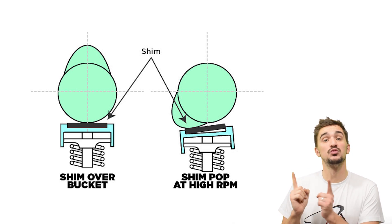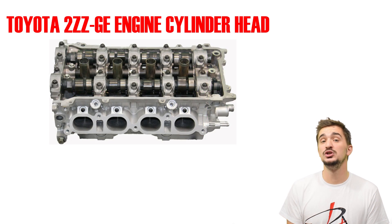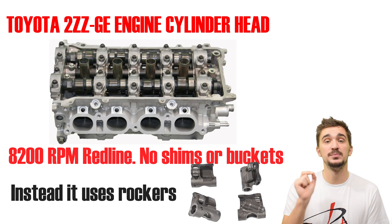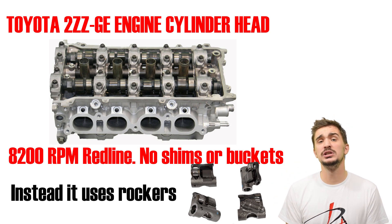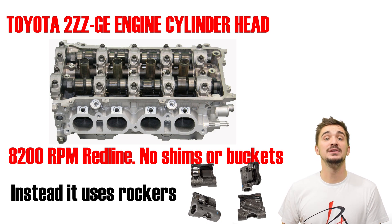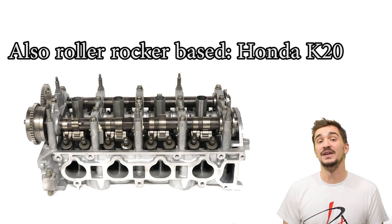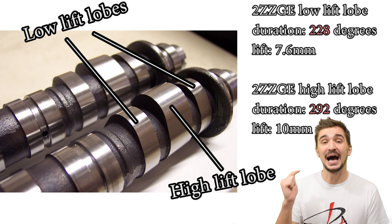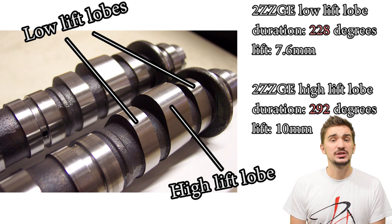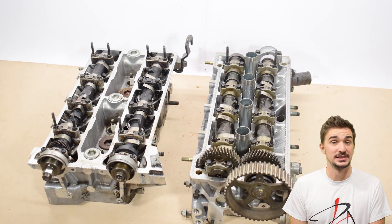This isn't something you have to worry about on a rocker-based valve train, and this explains why Toyota decided to use a rocker-based valve train on its more modern performance-oriented, high-revving 2ZZ-GE engine. You'll also find rocker-based valve trains on many other modern high-revving, high-performance engines, such as the Honda K20. All of these engines use variable valve lift and camshaft duration and have very aggressive cam specs on their high-duration, high-lift lobes. In contrast, most shim over bucket heads are forced to run relatively modest cam specs.